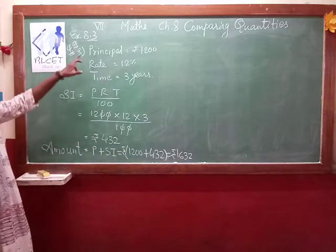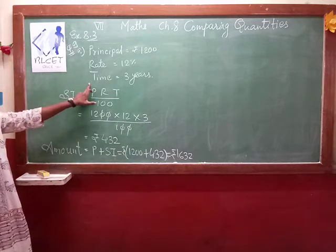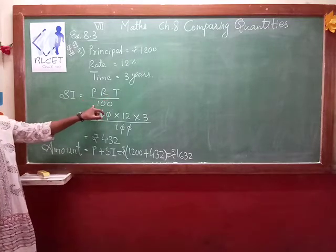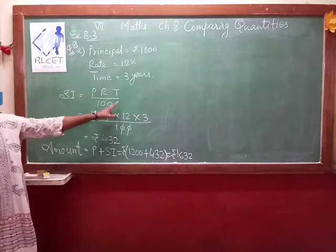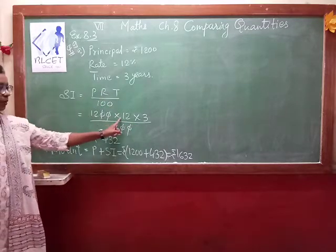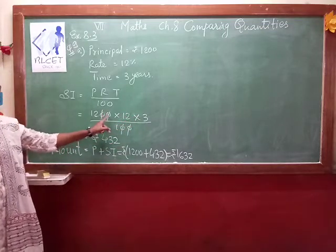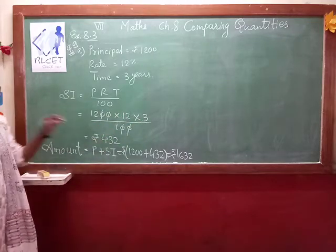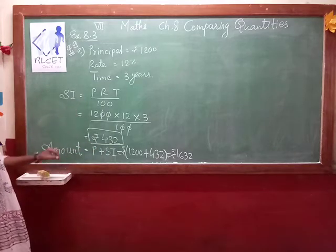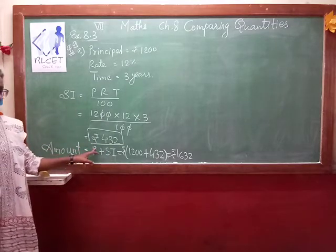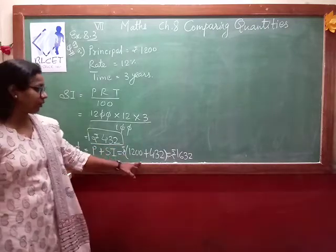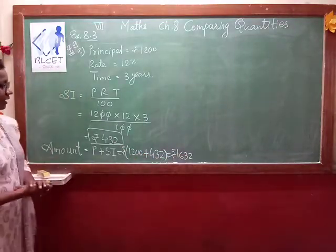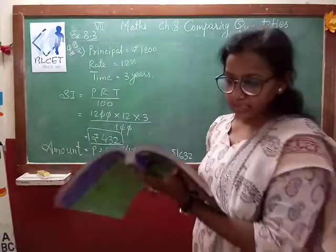Again, I am explaining what is given. Principal is given, rate of interest is given, and time period is given. The formula for simple interest is P times R times T divided by 100. Substitute the values: 1200 into 12 into 3 divided by 100. Two zeros cancel, 12 into 12 is 144, multiplied by 3. Your answer is rupees 432. This is your simple interest. Amount equals principal plus simple interest, giving you 1632.